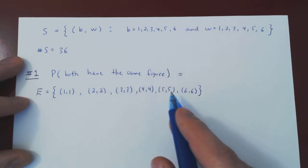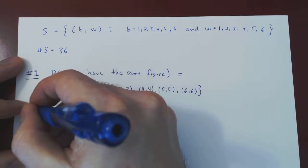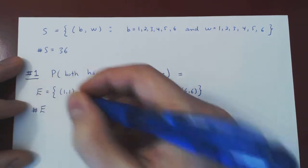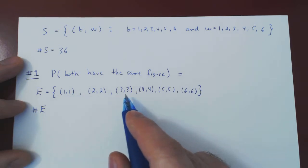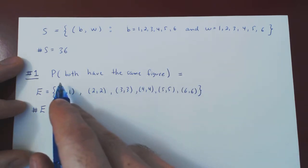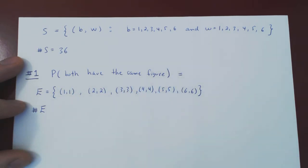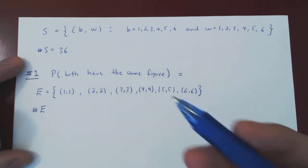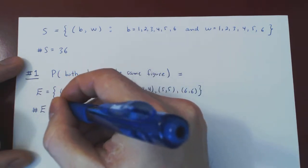There are 1, 2, 3, 4, 5, 6 possibilities. So there are six possible outcomes that satisfy the condition that both dies have the same figure. And so now we simply apply the Equiprobability Theorem.